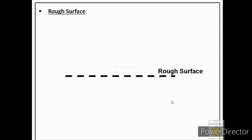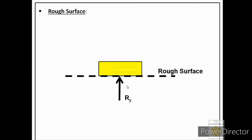For a rough surface, two types of body constraints are provided. The first constraint is normal to the surface, restricting motion in the y direction. The second constraint is along the surface, restricting motion in the x direction. However, the body can still rotate. So a rough surface provides two body constraints: one normal to the surface and one along the surface.